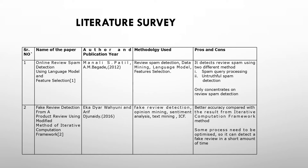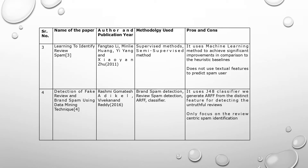Some processes need to be optimized so it can detect a fake review in a short amount of time. The third paper is 'Learning to Identify Review Spam.' The methodology used is supervised method and semi-supervised method. The pros and cons: it uses a machine learning method to achieve significant improvements in comparison to the heuristic baselines.